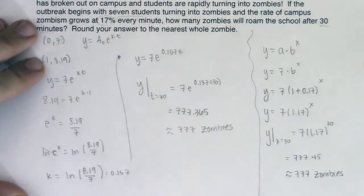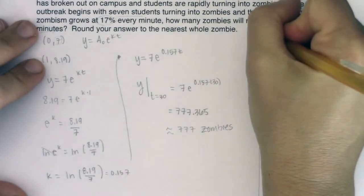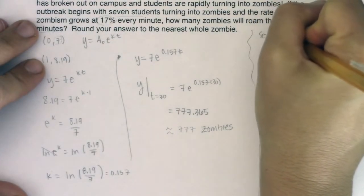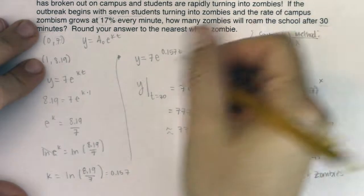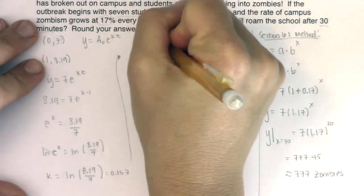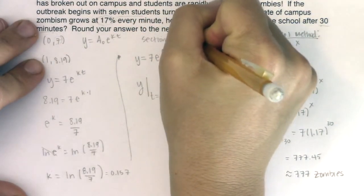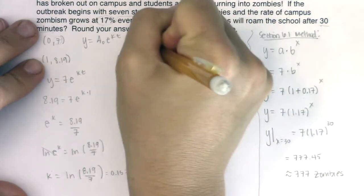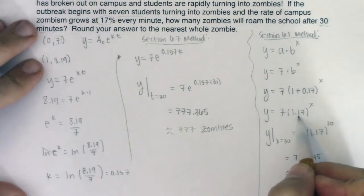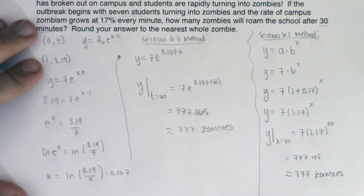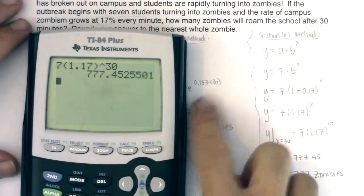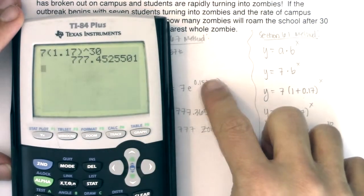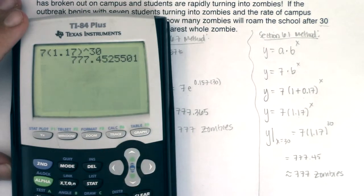This would still be, we got 770.45, I would still get around 777 zombies. So you've got the 6.1 method and this is the section 6.7 method. So let me just write this: this is the section 6.1 method which still works and this is the section 6.7 method. This has a base of a number other than e and this has base e and they're both fine. And if you want to just see a little tweak right here take a look at what e to the 0.157 would be. If we did e to the 0.157, what number are we pretty close to? 1.17, mind blown.